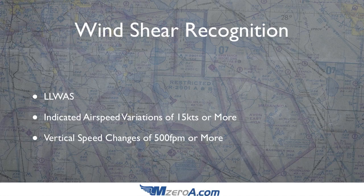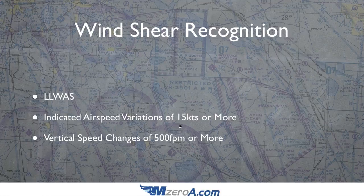So how would we even recognize wind shear? There's something called the low-level wind shear alert system, which is at most large airports — I'm talking about the big Class B airports. You won't find it as much at your tiny Class Delta airports. Some aircraft, specifically large airliners, have a wind shear alert system built into their avionics suite. Most trainer aircraft will not. So how we recognize it is an indicated airspeed variation of 15 knots or more, or vertical speed changes of 500 feet per minute or more. As we're climbing out, we're diverting attention inside and outside, watching for those airspeed and vertical speed variations.